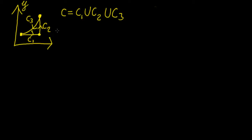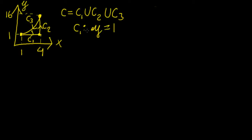This is going to be our complex plane, with the imaginary axis y and the real axis x. We're going to have the following points: (1,4) and (1,16). The three curves are defined as: c1 by y equals 1, c2 by x equals 4, and c3 by y equals x squared.